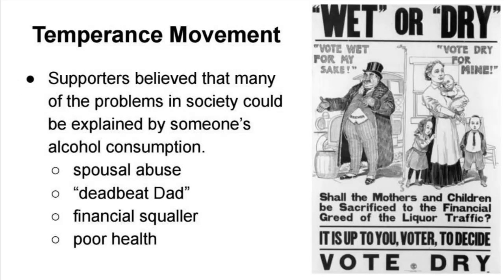The temperance movement was supported by people who thought problems in society could be explained by alcohol consumption — things like spousal abuse, deadbeat fathers never helping with children, financial squalor because the father spent all the money at a saloon, and poor community health because money was being spent at the local saloon rather than on doctors. The temperance movement grew during the progressive movement later in history. There was even a constitutional amendment outlawing alcohol, but it was so unenforceable that it was later repealed.